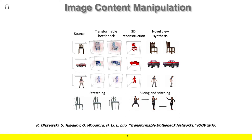Given the source input images on the left, we extract an implicit volumetric representation of the image content from which we can perform a variety of tasks, including not just novel view synthesis, but 3D reconstruction, or as seen on the bottom, non-rigid transformations such as stretching an object, or even combining the content of multiple object representations.